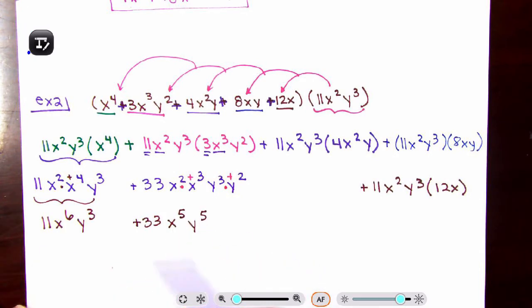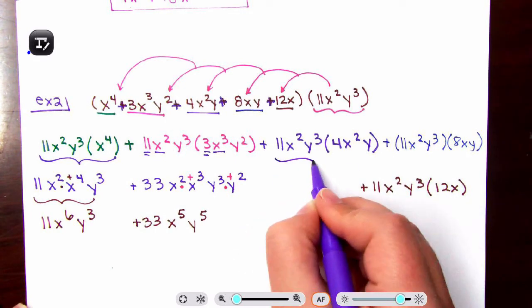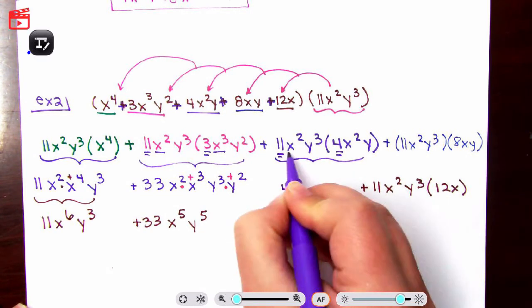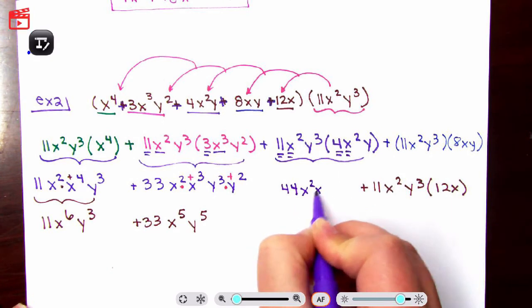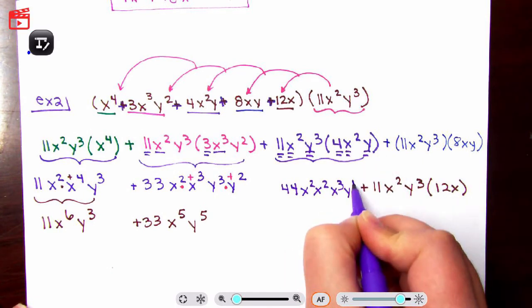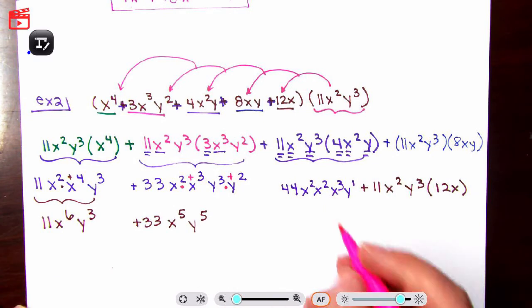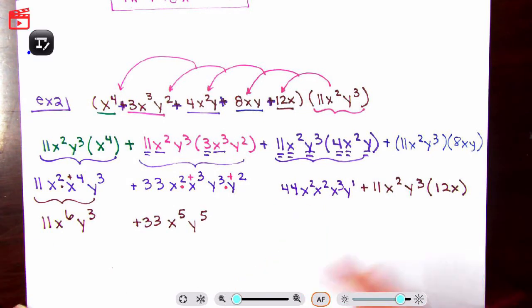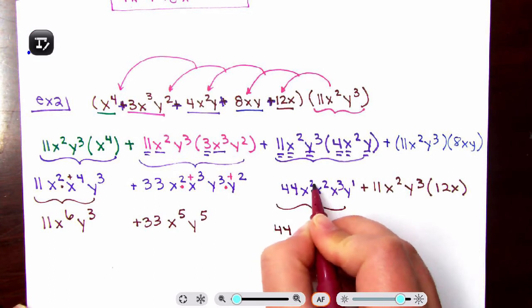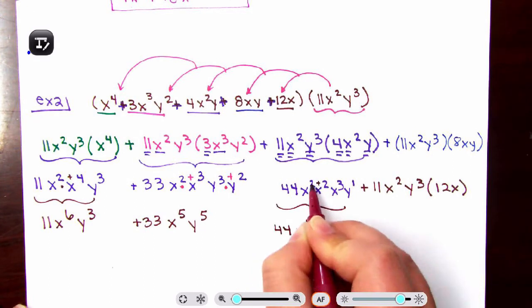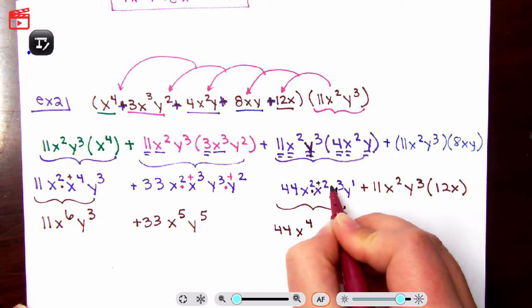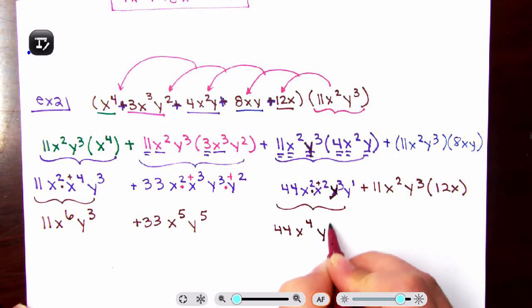Moving on to the next one: 11 times 4 is 44; x squared times x squared adds to x to the 4th; y cubed times y — y without an exponent is y to the 1st — so 3 plus 1 is 4, giving y to the 4th. So the third term is 44 x to the 4th y to the 4th.